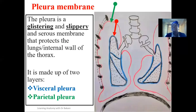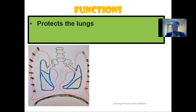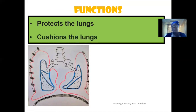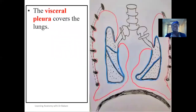Let's look at the function of this pleural membrane. One function is that they protect the lungs, acting like a protective covering to prevent structures from directly coming in contact with the lungs. It also helps to cushion the lungs — the surfaces are not wide open but are lined by the pleural membrane, providing a cushion effect to prevent damage during contact with other structures during movement.